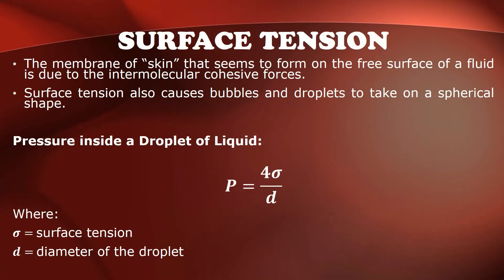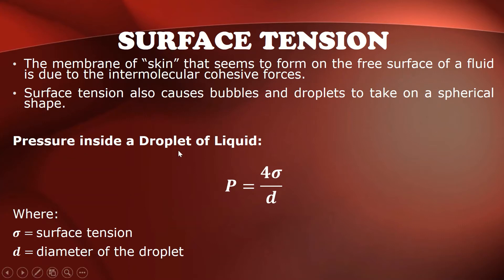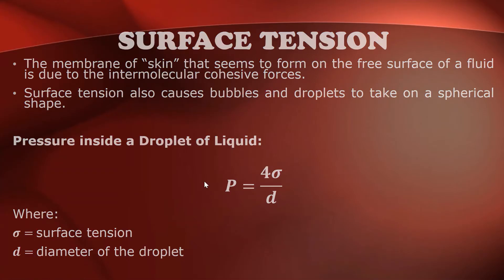For surface tension, it is the membrane or skin that seems to form on the free surface of a fluid due to intermolecular cohesive forces. Surface tension also causes bubbles and droplets to take on a spherical shape. To compute the pressure inside a droplet of liquid, it is equal to 4 times the surface tension divided by the diameter of the droplet.